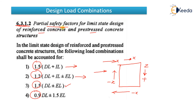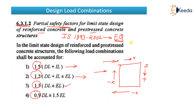This was the video on design load combinations. The IS code used is IS 1893:2002, which you should remember and can download. It is a special IS code that provides various guidelines related to earthquake loads. Thank you.